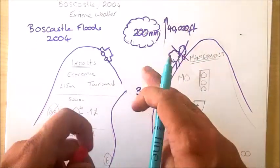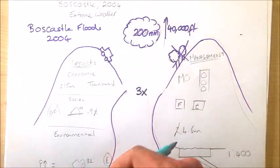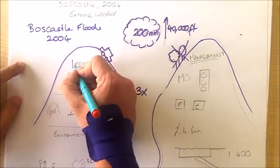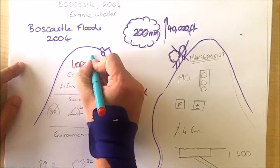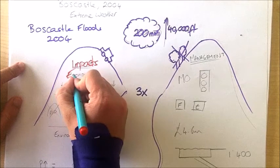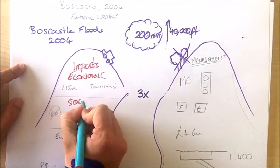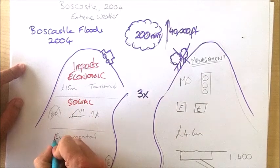So, we've got the causes of the Boscastle floods back in 2004. We now need to look at the impacts of an extreme weather event. We're going to look at that in this left-hand hill here. In geography, we always like to break things down. So, we're going to look at the economic impacts, the social impacts, and the environmental impacts.